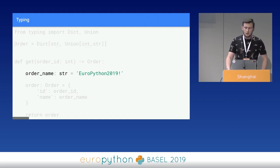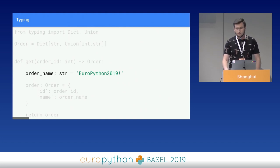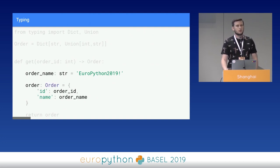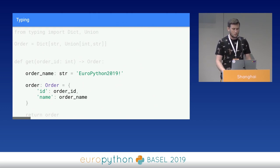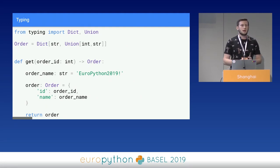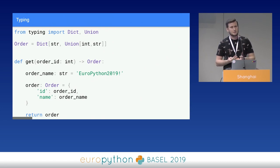From Python 3.6 onwards, we gain the possibility to annotate variables. So we can say that our order name is a string type. Also, we can use our type annotation aliases to annotate an order. As you can see, it is still a simple dictionary initialization — nothing changed, only the type is set. And this is how a fully typed function in Python 3.6 looks like.